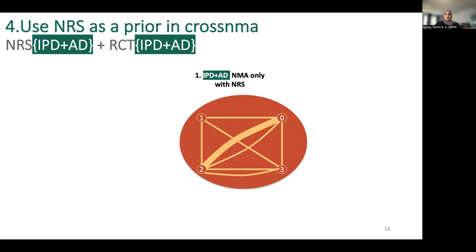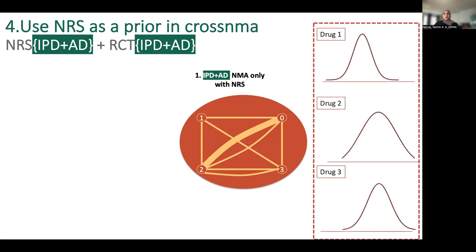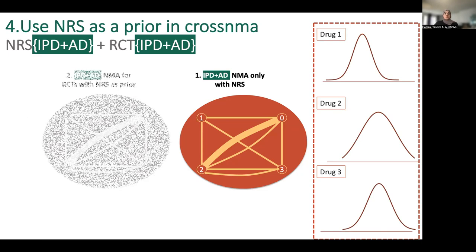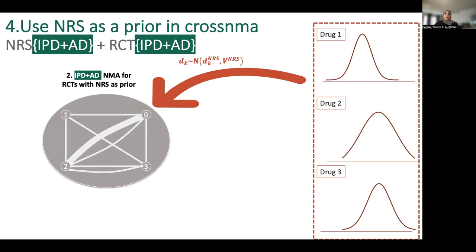The last approach in combining clinical and observational data is using observational information as a prior to model the clinical evidence. It is a two-step approach. First step is to conduct network meta-analysis only for observational data using individual aggregated data or a mixture of both. In Bayesian framework, we will get a posterior distribution of each relative treatment effect. Second step is to conduct network meta-analysis for clinical data, but as a prior we use the posteriors we get from observational data. To control this potential high influence of observational studies, we downweight the contribution from these studies by increasing the variance from the posteriors or make these distributions flatter.